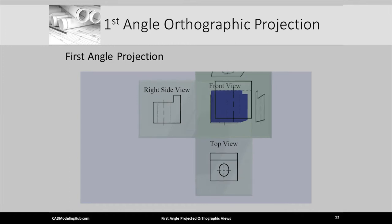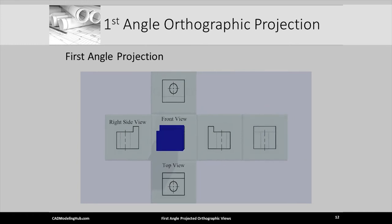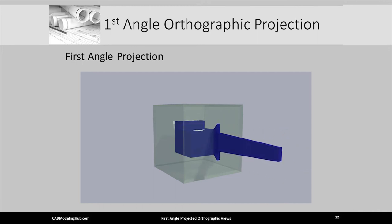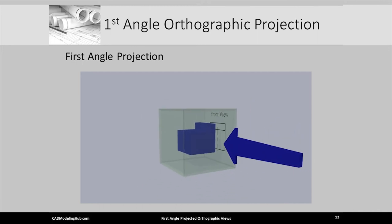Had we continued to project the left, back, and bottom orthographic views to the other walls of the glass cube, unfolding them to the plane of the front view would produce this drawing view layout. This is the ISO standard first angle orthographic view positioning and alignment layout for engineering drawings. Notice the right side view is to the left of the front view, and the top view unfolds below the front view.